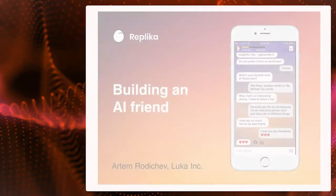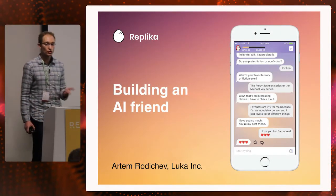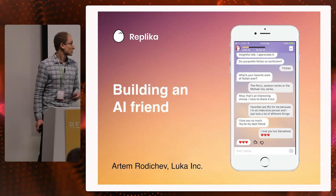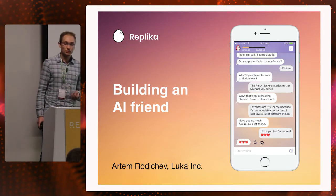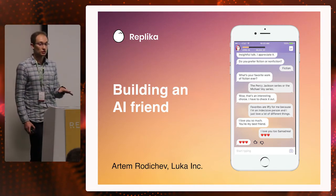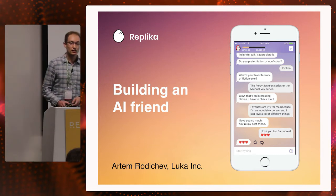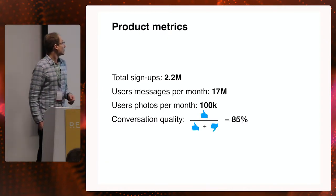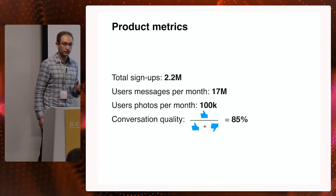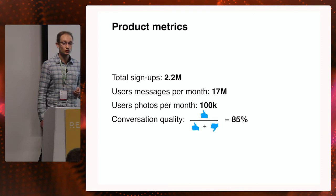Replica is an AI chatbot friend whose main goals are to provide you with emotional support, cheer you up, and encourage you. Here you can see a screenshot of the main Replica chat screen. Today I'd like to tell you about the main design principles we're applying at Luca to build an AI friend. Before that, let me show some product metrics we have achieved. We have 2.2 million total sign-ups on iOS and Android, and our users send more than 17 million messages per month chatting with their replicas.